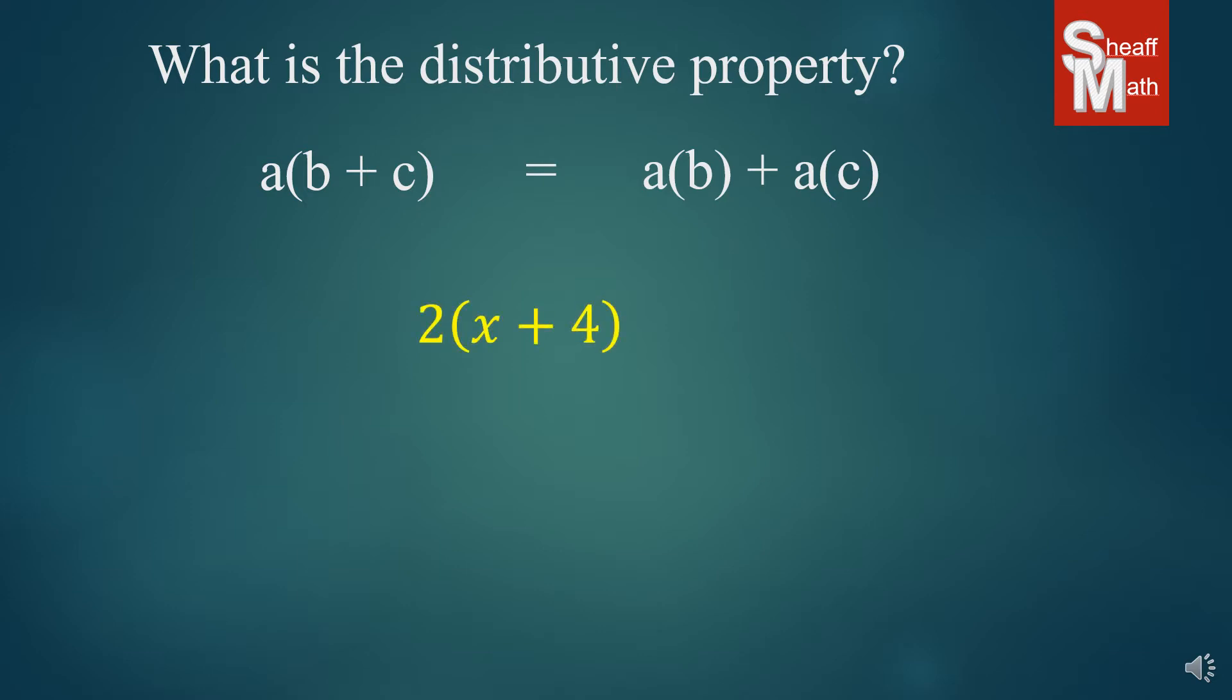Now here is a problem with the distributive property. So what that looks like is we're simply multiplying the 2 times the x and the 2 times the positive 4. And it looks like this: 2 times x plus 2 times 4, and we simplify those and we get 2x plus 8. That's not too bad.